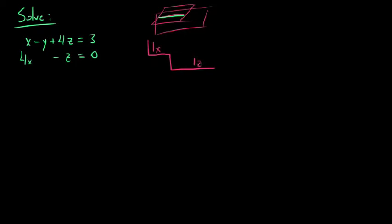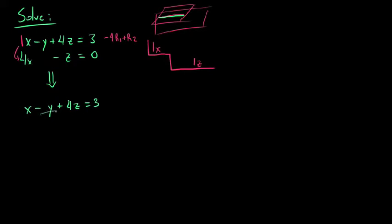We're going to have one x and then one z over here. Since our first row already has one as its leading coefficient, we're going to make everything below it into zero. Our first move is to take negative four times row one and add that to row two. This produces our new row-equivalent system, which has the same solution or solutions. Negative four times x plus positive four x is nothing. Negative four times negative y is positive four y, and four y plus nothing gives us four y. Negative four times negative four z is negative sixteen z; negative sixteen z plus negative z is negative seventeen z. Negative four times positive three is negative twelve, and negative twelve plus zero is negative twelve.